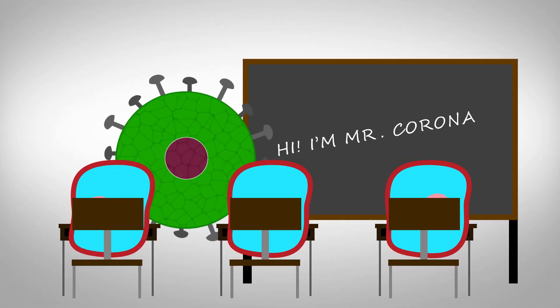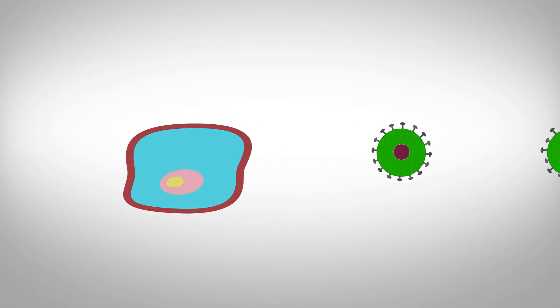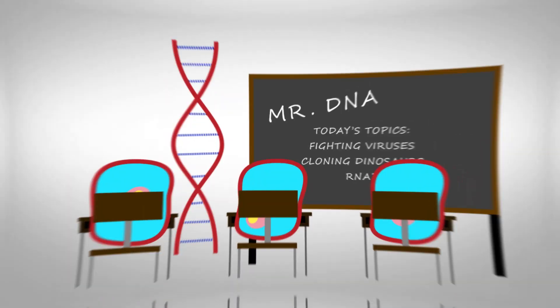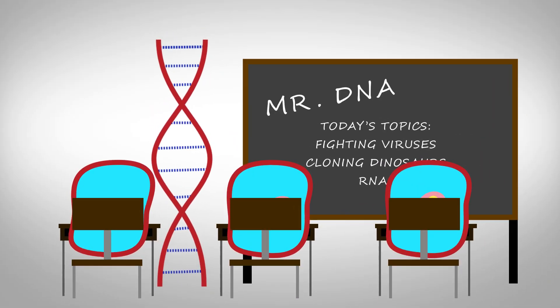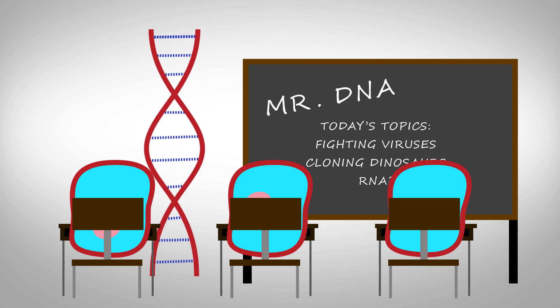Viruses work by teaching our body's cells to create copies of the virus. Genetic vaccines take this same trick and reverse it. Scientists are able to write code, in this case in the form of DNA or RNA, that teaches your body's cells to fight off the virus.